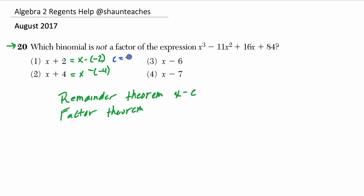So in the first case, c is negative 2, and then c is negative 4, and then here c is 6, and then finally c is 7.